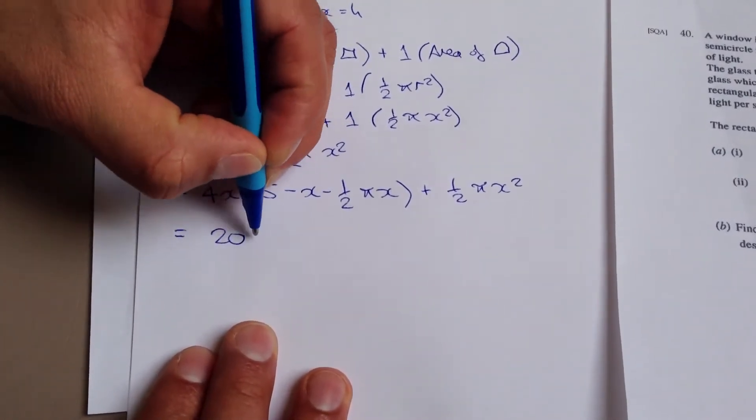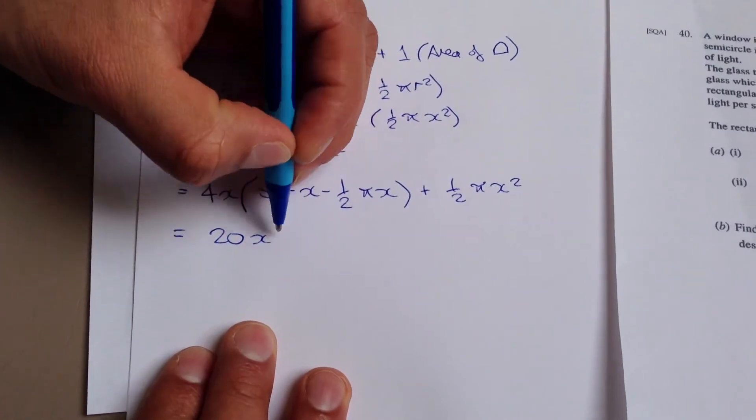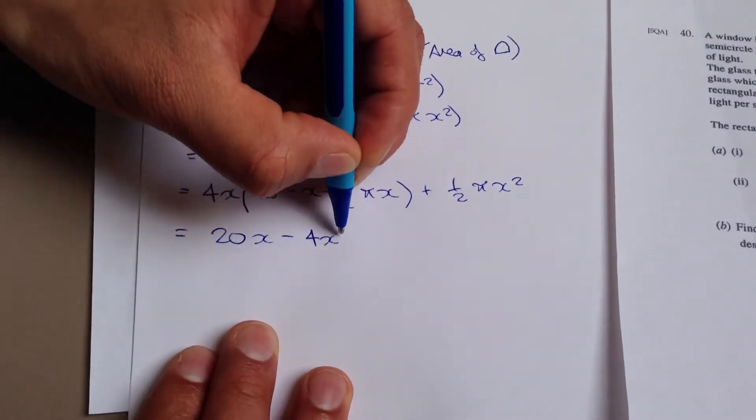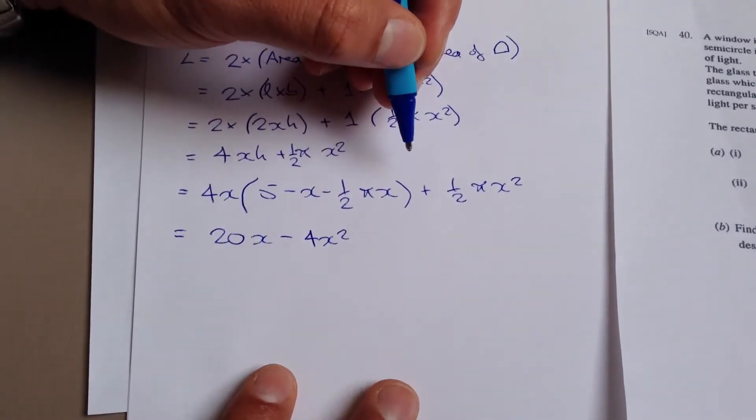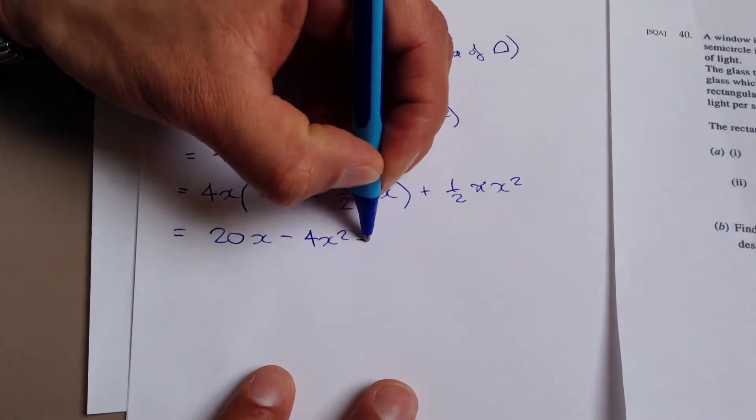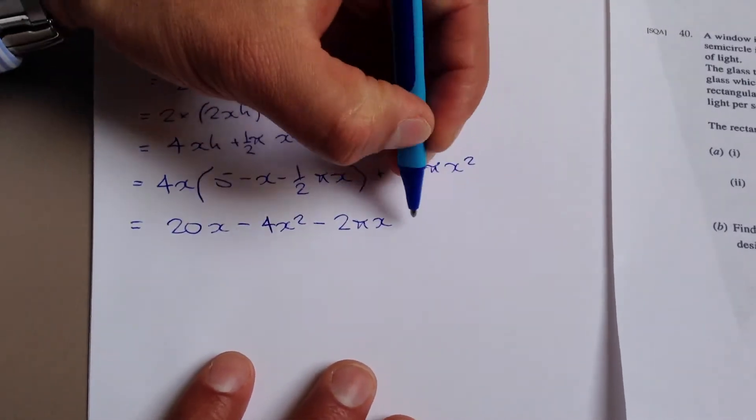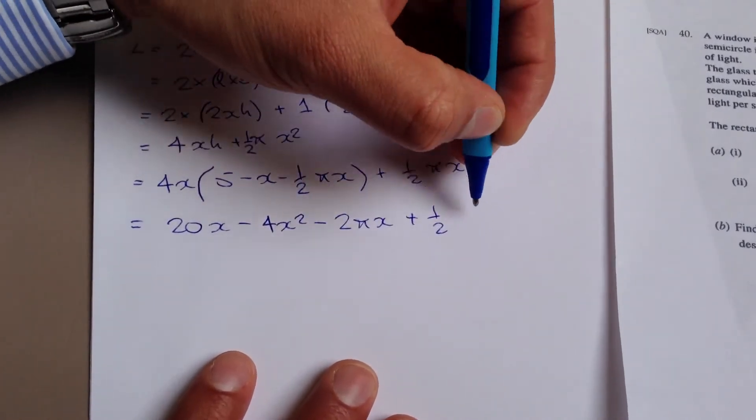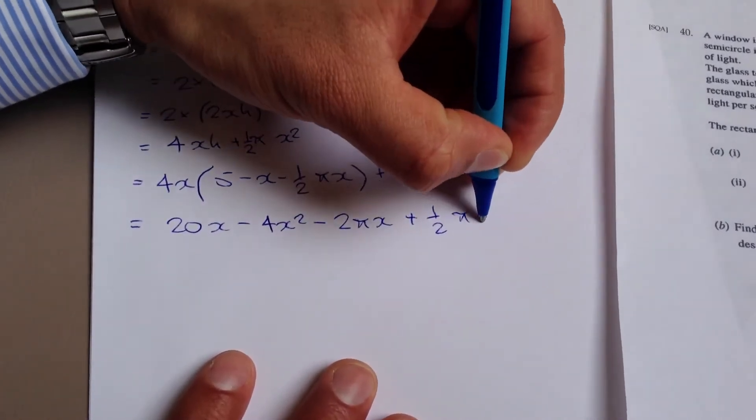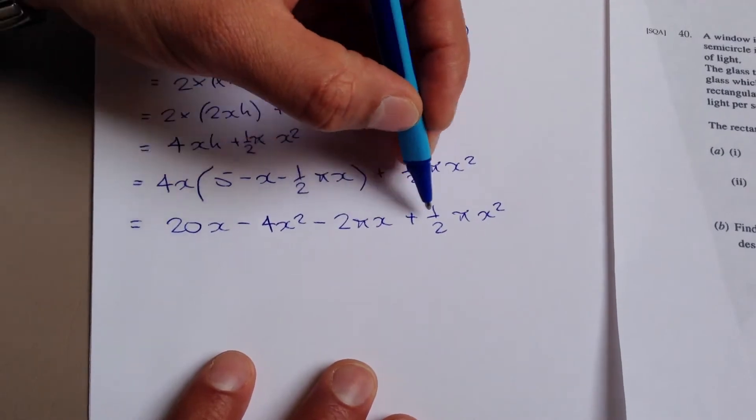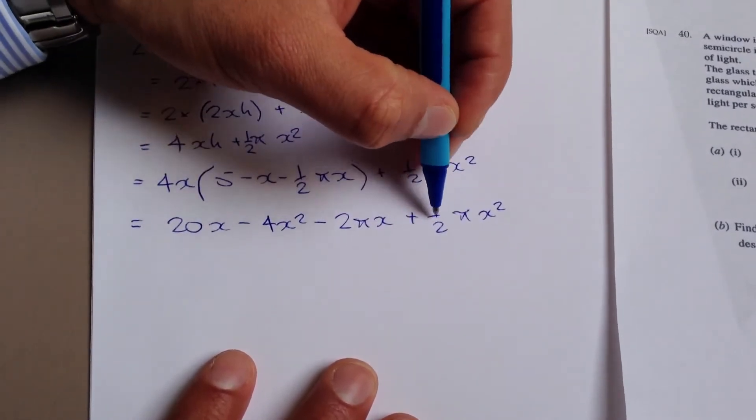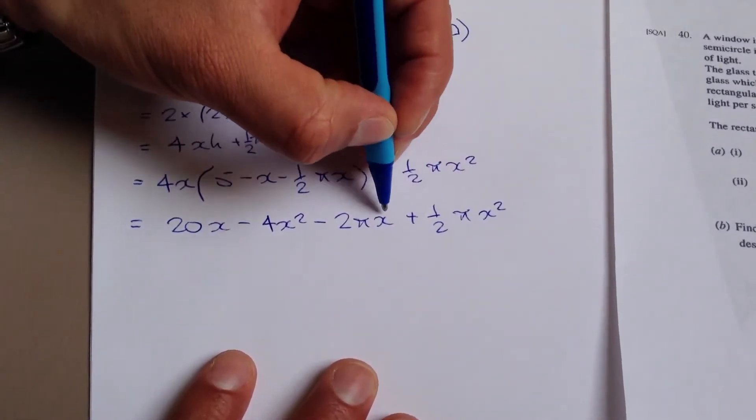So let's tidy this up and see how that looks then. So 4x times 5, that's going to give me 20x. 4x times minus x is going to give me minus 4x squared. And 4x times minus a half pi x is going to give me minus 2 pi x. And of course I've got my plus half pi x squared over here. And so I've got minus 2 pi x plus a half pi x. Oh wait, that's squared.